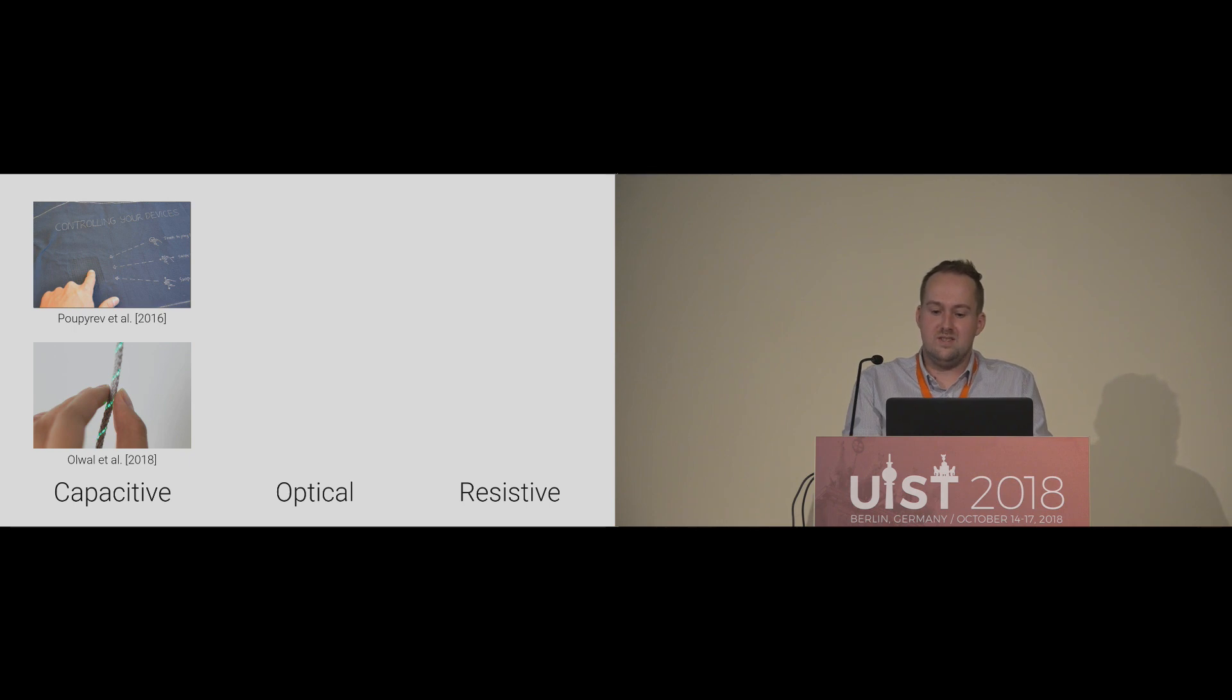Impressive progress on capacitive sensing has been made with Project Jacquard, which uses a yarn-based capacitive sensor. This sensor can be embedded in any textile to detect taps and swipes. Yesterday we heard the amazing talk of Alex and his group how they used this technique in IO braid.